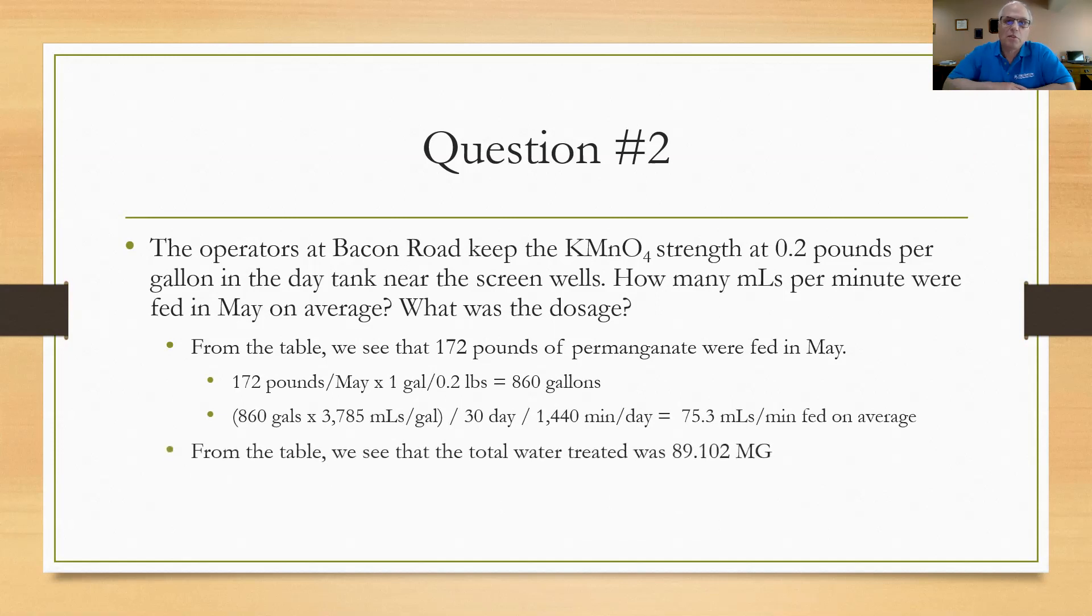So now the second part of that was what was the dosage? Well from the table I can see that the total water treated was listed as 89,000 or 89 million 102 thousand gallons or 89.102 million gallons, MG. I'm going to take that 172 pounds divided by the pumpage of 89.102. I see that we fed at a rate of 1.93 pounds per million gallons. And of course to convert that to milligrams per liter, I would divide by 8.34, and I come up with a dosage of 0.23 milligrams per liter dosage. Hope you got that one. Let's move on to question number three.